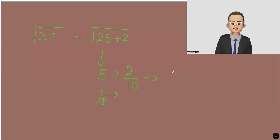And therefore, the square root of 27 is 5 plus 2 divided by 10, which is 0.2, which equals 5.2. And that's the square root of 27.